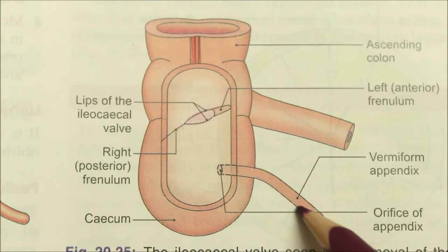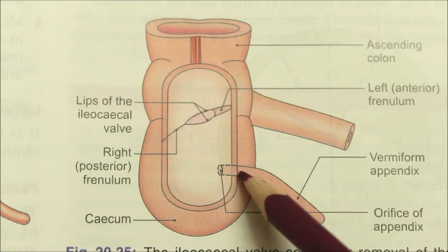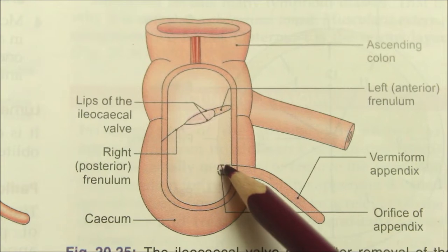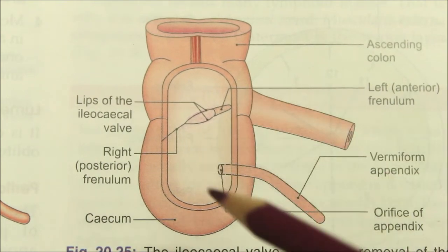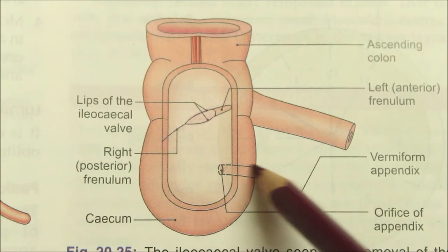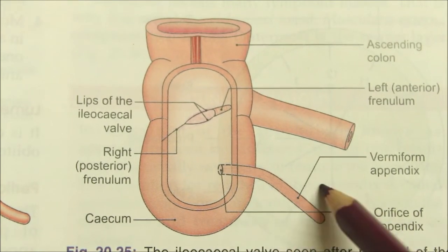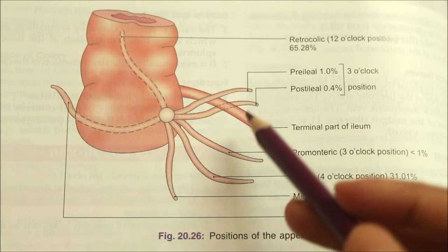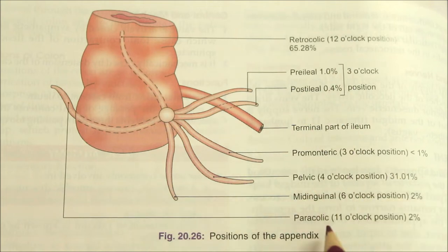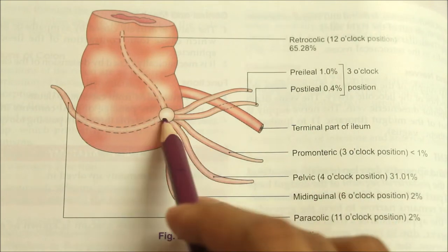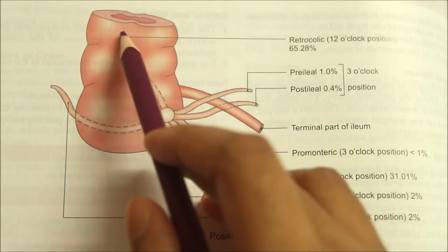Next let's move on to the vermiform appendix. This is a worm-like diverticulum arising from the posteromedial wall, 2 cm below the ileocecal orifice. Its dimensions are 2 to 20 cm in length, and it is longer in children than in adults. It lies in the right iliac fossa. The base of the appendix is fixed while the tip can point in any direction. Positions are compared to the hour hand of a clock: upwards or to the right is the paracolic or 11 o'clock position, and behind the cecum or colon is the retrocolic or 12 o'clock position, which is the commonest.